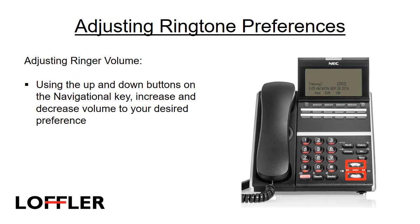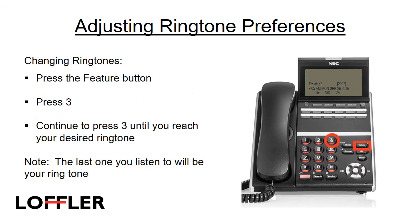To adjust the ringer volume when your phone is ringing, use the up and down buttons on the navigational key to set your desired volume. To change your ringtone, press the feature button, dial 3, and continue to press 3 until you reach your desired ringtone. The last one you listen to will be the ringtone that is set.